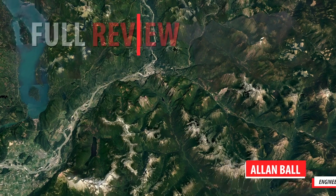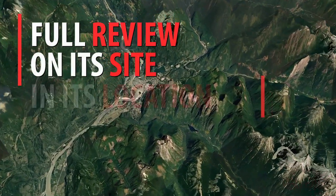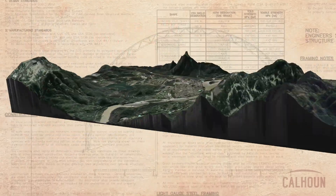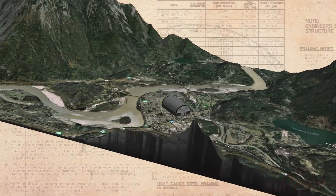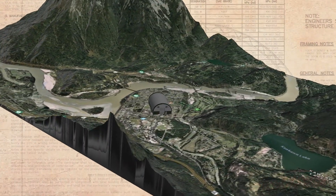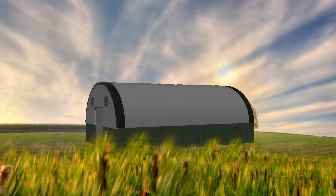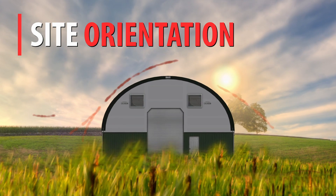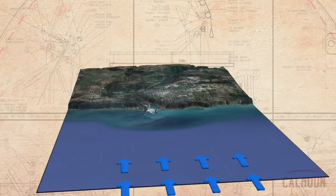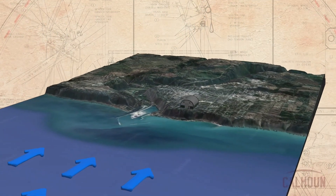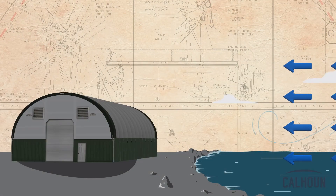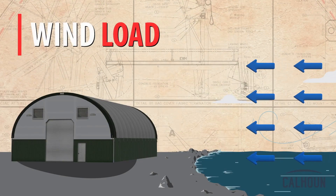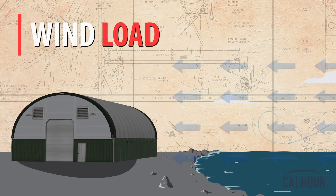Every single building we sell for installation has a full review on its site and its location. What you would be experiencing inside a building in a high wind is going to depend on the orientation of our buildings. If your building is facing open water, that's a particularly deleterious environment — there's a very high wind load coming off open water because there's nothing there to break up the wind.